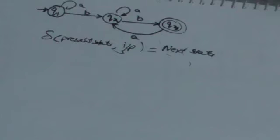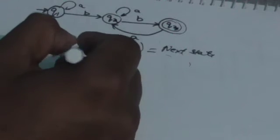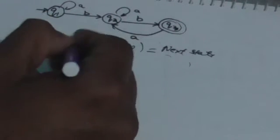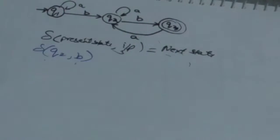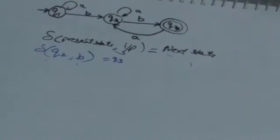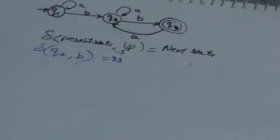Now there is a drawback in this transition function — it shows the transition of finite automata only for a single input symbol. Suppose we have to find out what is the next state of this automata when its current state is Q2 and it reads input symbol B. When it is in Q2 and reads B, it will jump to state Q3. So it gives transitions only for a single input symbol.